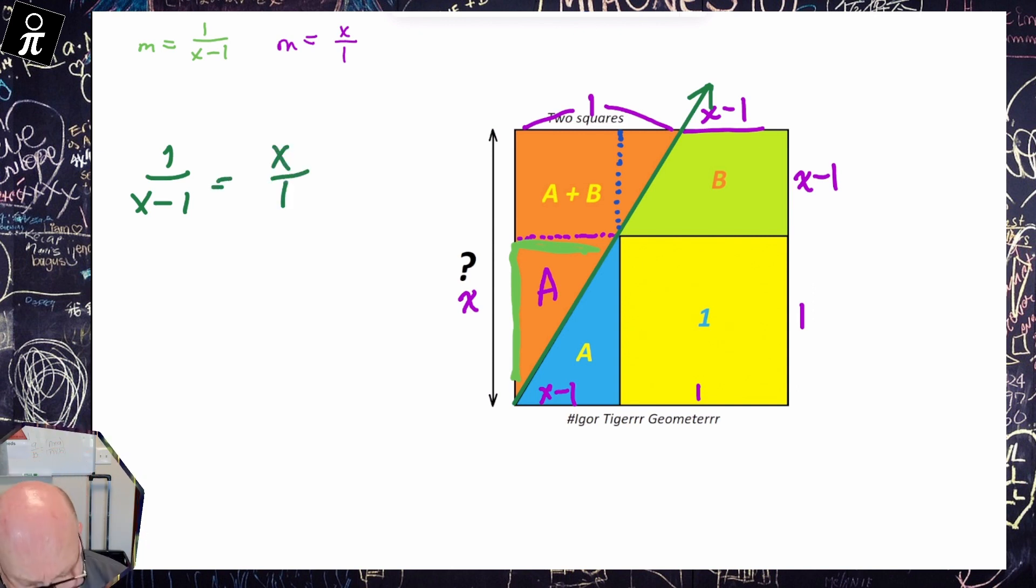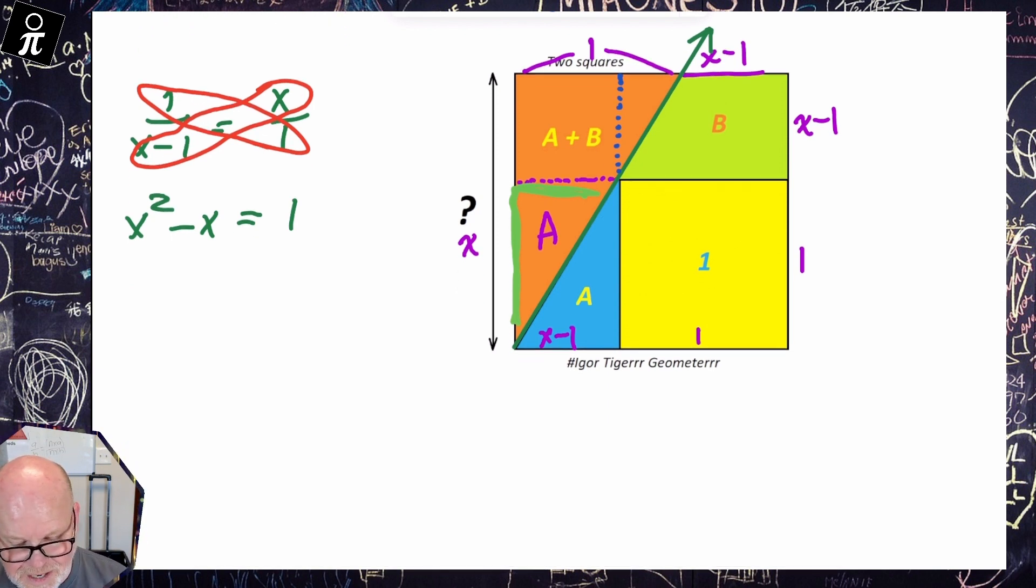Now we could do some cross products here, and I've got X squared minus X is equal to one, because I just did my little cross products right there. And then, let's get back to the green. I could say that's X squared minus X minus one is equal to zero.